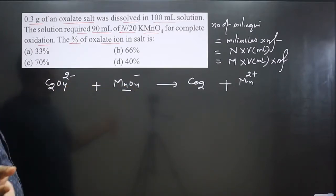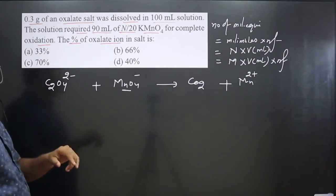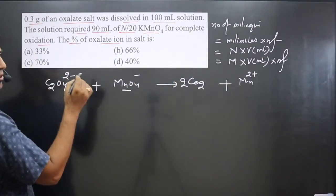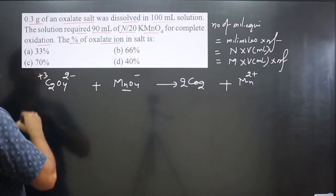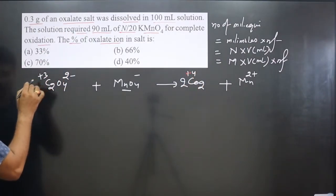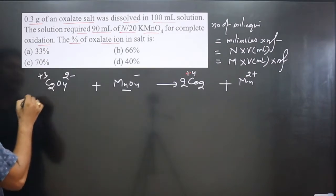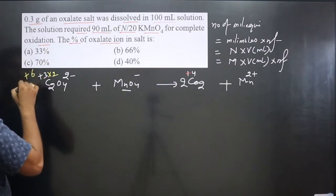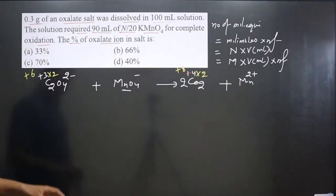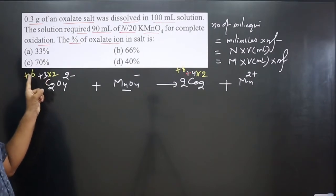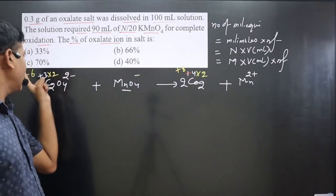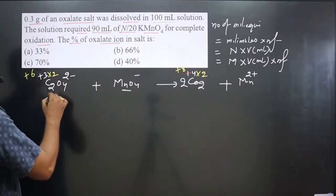Always balance the number of atoms before balancing charge to find oxidation numbers. For oxalate ion C₂O₄²⁻: two carbons with charge −2 gives each carbon an oxidation state of +3, so two carbons = +6. On the product side (CO₂), carbon is +4, so two carbons = +8. The increase from +6 to +8 gives a difference of 2. So the n-factor for oxalate ion is 2.